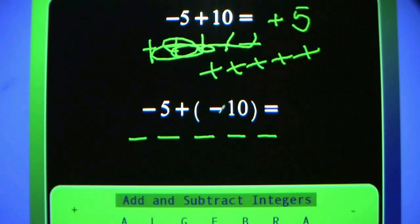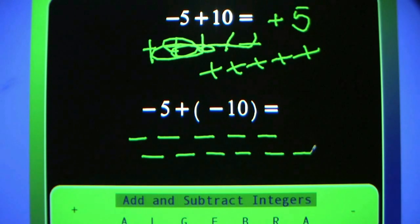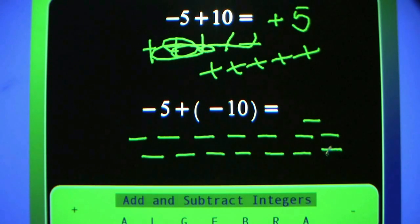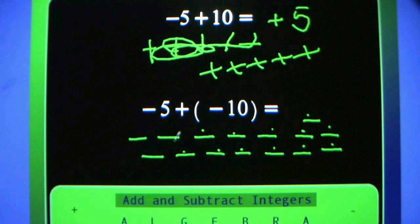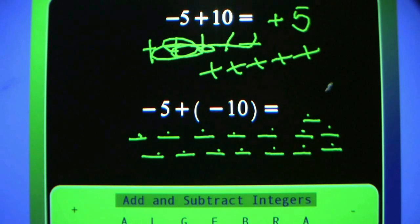Negative 5 plus negative 10. It doesn't matter where you mark them, just so that you have 5 for the negative 5 and 10 for the negative 10. Count them — negative 15. Don't miss any. You have negative 15.